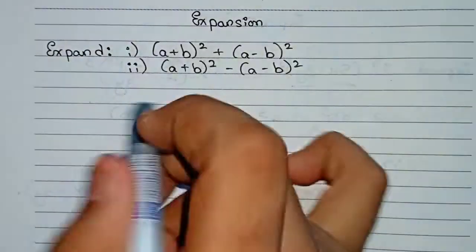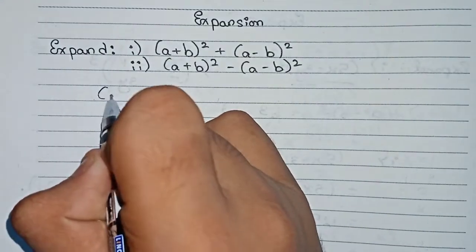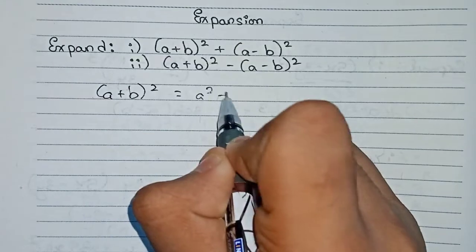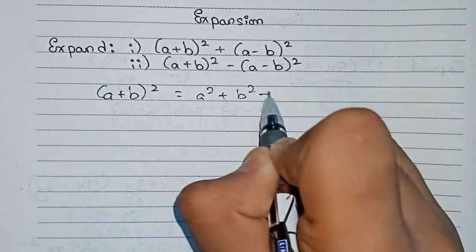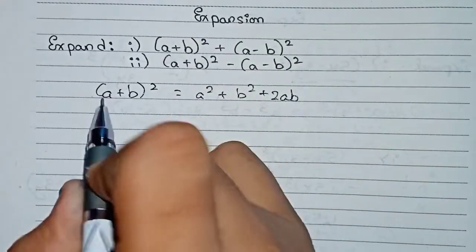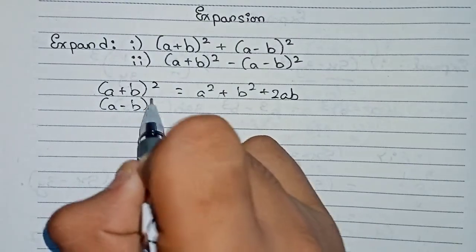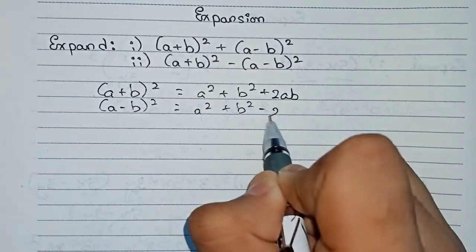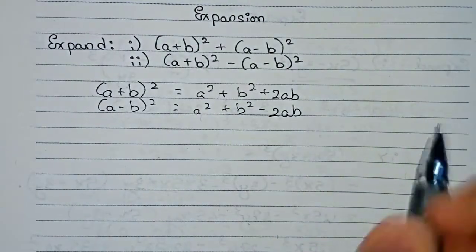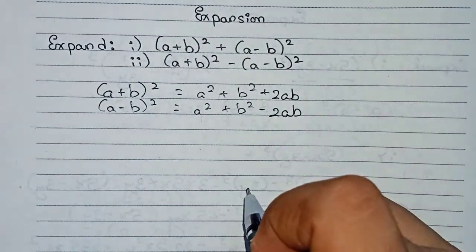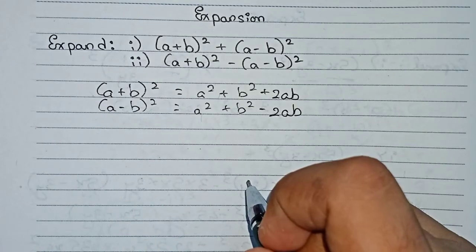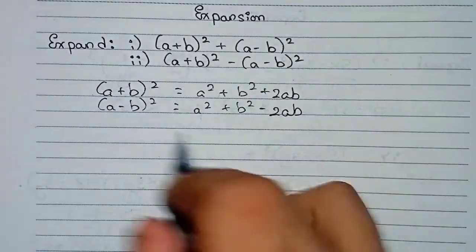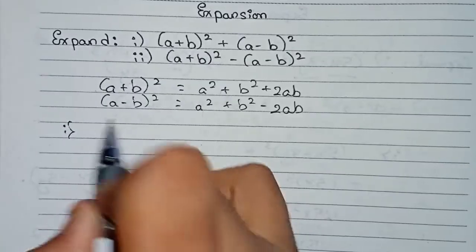We will use the identities: (a + b)² = a² + b² + 2ab, and (a − b)² = a² + b² − 2ab. You can also check the formulas for full standard equations used in expansion via the link in the description. So we proceed to question one.